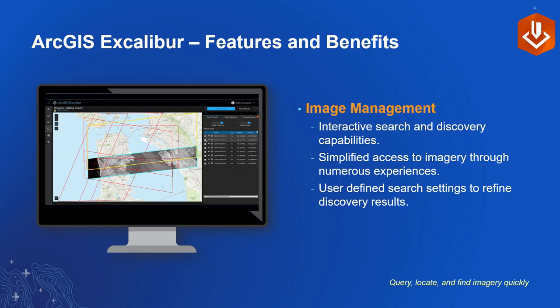The imagery management — access and discovery — includes interactive search and discovery capabilities, a quick way to search and find images. What we found when talking to customers is that most traditionally go to a different application to search and find imagery, then open another application for exploitation. Inside Excalibur, you're not leaving your experience. The same experience you use to exploit is the same one you use to locate and find imagery. You can also set user-defined settings to automatically find updated imagery in your specific area.